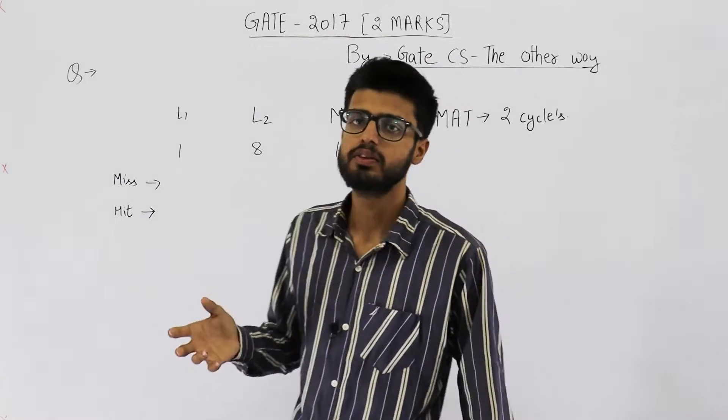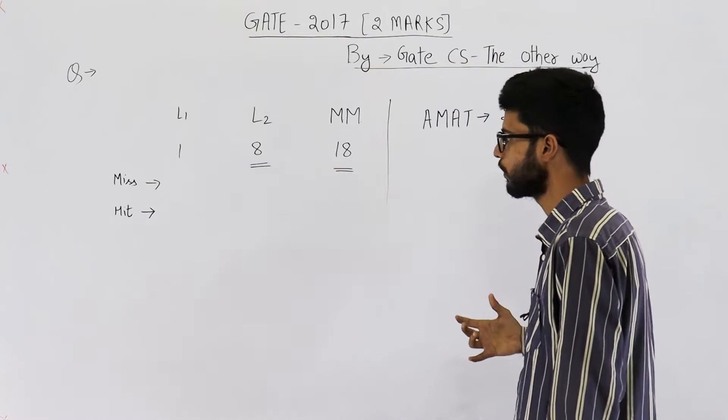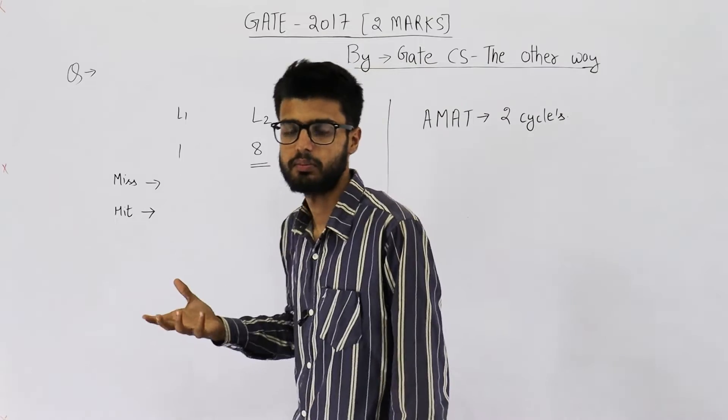While recording this same video in Hindi, I remembered that I didn't mention why we are using hierarchical access. That's because of the word penalty. In the question, they are saying that 8 clock cycles is penalty, 18 clock cycles is penalty. Penalty means how much extra you have to pay. So, in case of miss in L1, you have to incur 8 more clock cycles. The CPU will wait for 8 more clock cycles because penalty is extra. That means 1 plus 8 will be the total amount of clock cycles required in case of miss in L1.